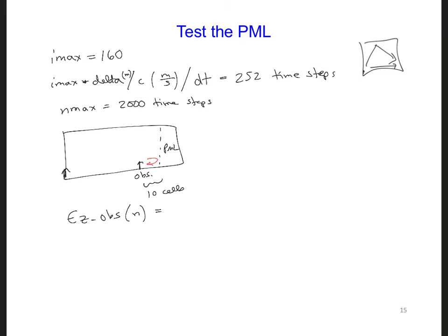So we're going to say this observation point is equal to the EZ component at, let's see, if this is 160, PML is at 150, and since this is 10 cells, this will be at 140.